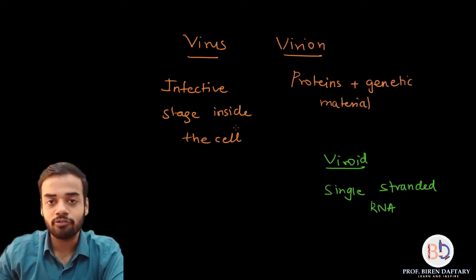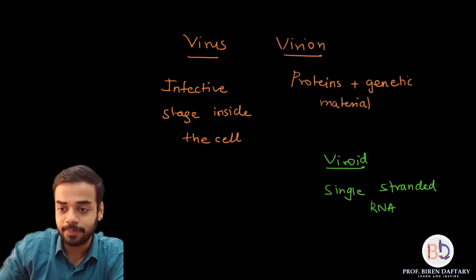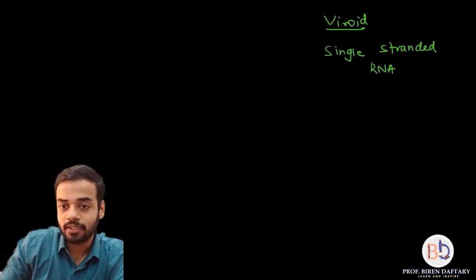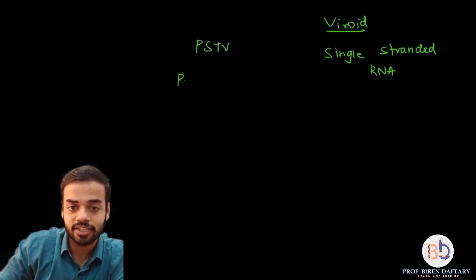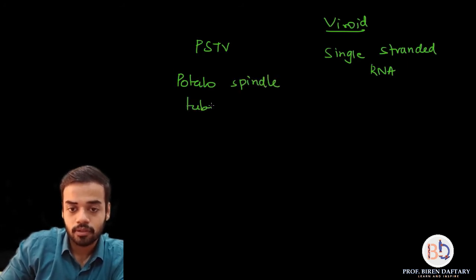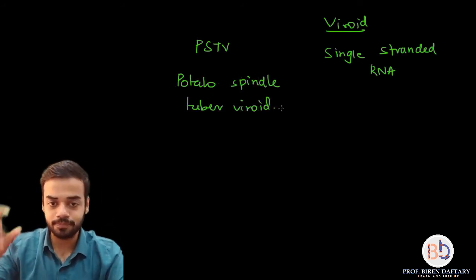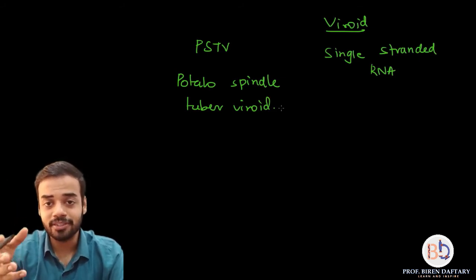One very common example of a viroid is PSTV — Potato Spindle Tuber Viroid. Most of you know how a virus infects an animal or plant, but these viroids only infect higher plants.